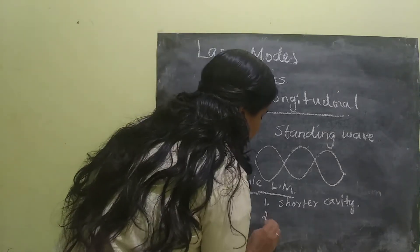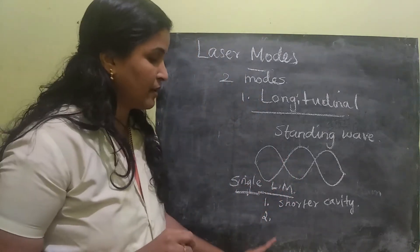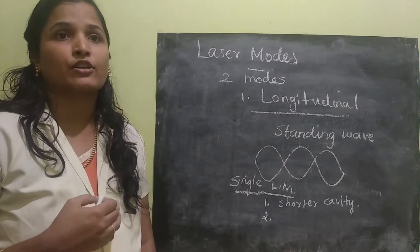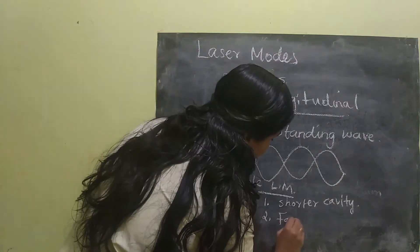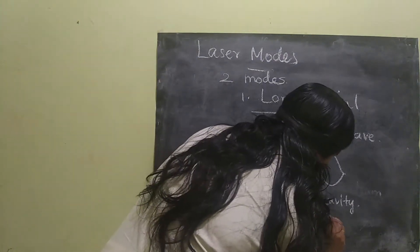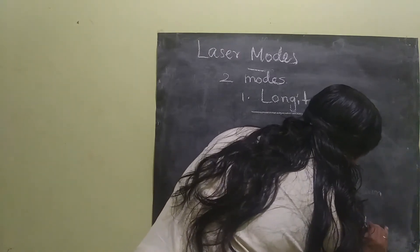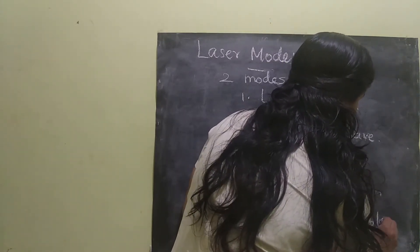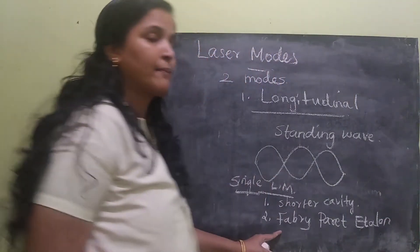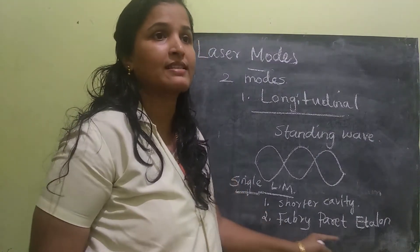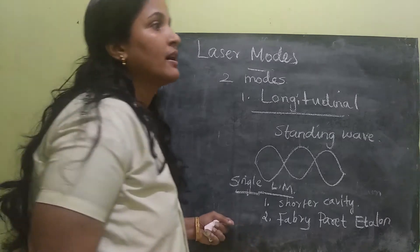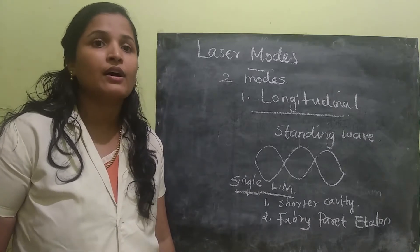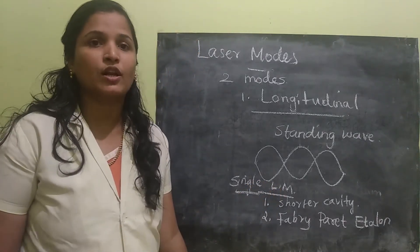The second method is introducing a frequency controlled device, which is called a Fabry-Perot Etalon. This is a frequency controlled device that will be introduced into the laser cavity to achieve a single longitudinal mode.